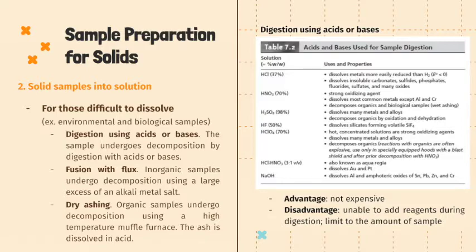Another example is Piranha solution, commonly seen in chemistry laboratories at UPM, which is a 3:1 mixture of concentrated sulfuric acid and hydrogen peroxide. When using these solutions, it is important to keep in mind that these are highly corrosive reagents. An advantage of this method is that it is not costly since you only need the solvents, though microwave-assisted digestion will be relatively more expensive due to the equipment. A disadvantage is that you are unable to add reagents during digestion, and there is a limit of typically around 1 gram of sample.